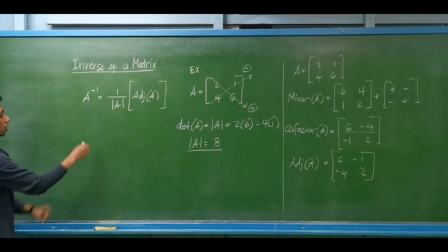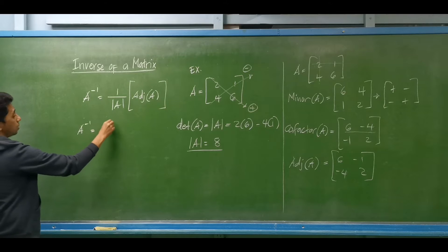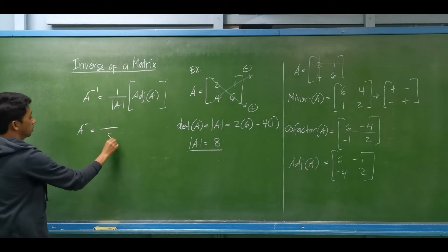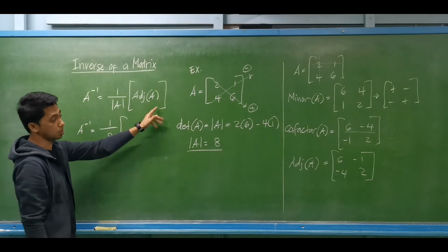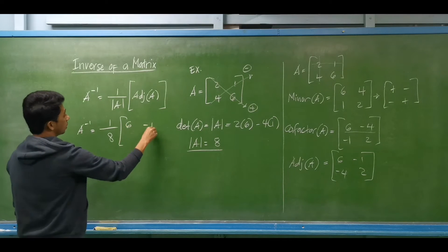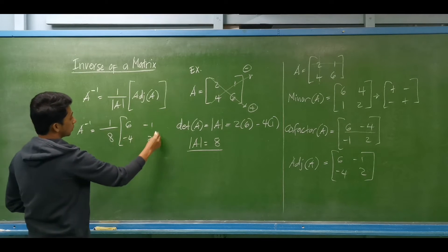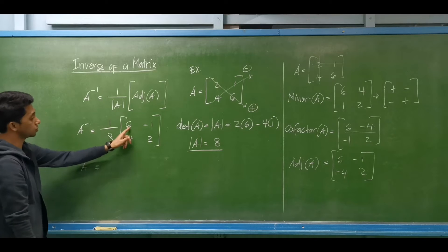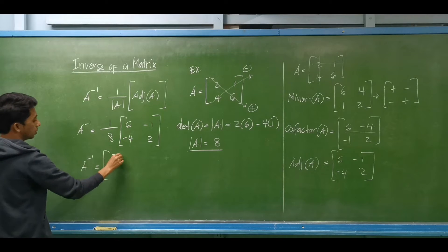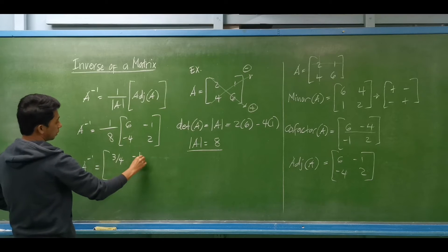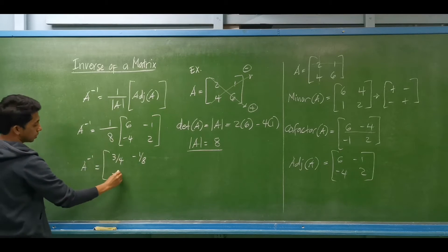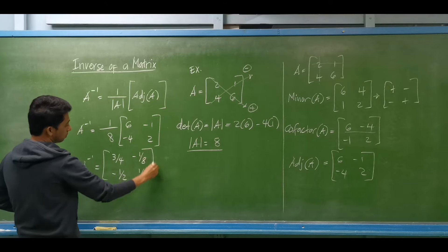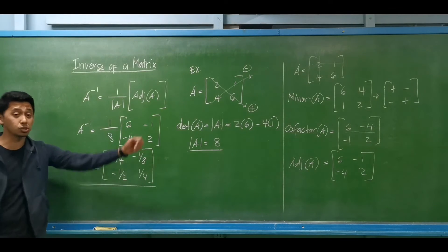Now we determine the inverse of matrix A: this is 1 divided by the determinant of matrix A — which is 8 — multiplied by the adjoint of matrix A, which is [6, -1; -4, 2]. Distributing the scalar, the inverse of matrix A equals: 6 over 8 equals 3 over 4, negative 1 over 8, negative 4 over 8 equals negative 1 half, and 2 over 8 equals 1 over 4. This is the inverse of matrix A.